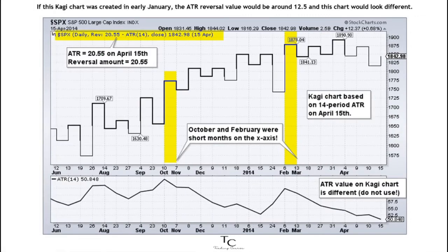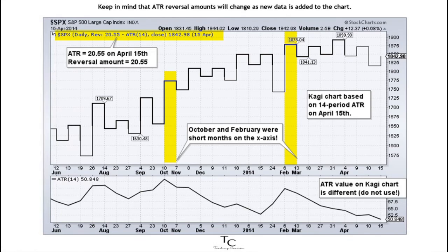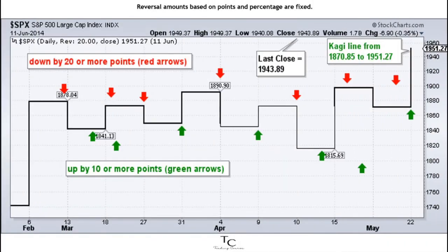If this CAGI chart was created in early January, the ATR reversal value would be around 12.5 and this chart would look different. Keep in mind that ATR reversal amounts will change as new data is added to the chart. Reversal amounts based on points and percentage are fixed.